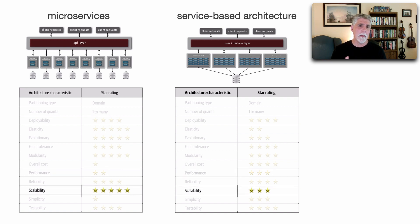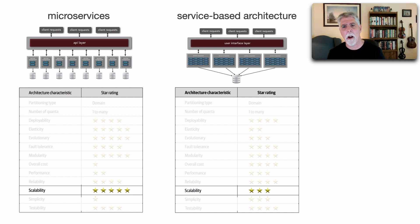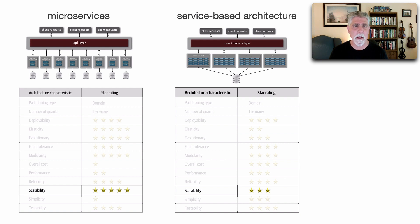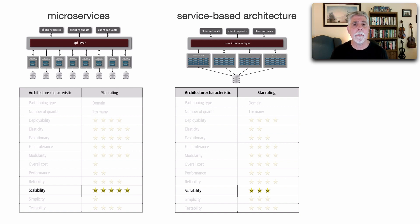Scalability is another area where service-based architecture loses two stars because of the coarse-grained nature of a domain service. When we scale out any particular domain, we are scaling all of that domain functionality even when we may not need to. With microservices, we can scale at a function level — in fact, microservices has the highest level of scalability because of the fine-grained nature of those services.